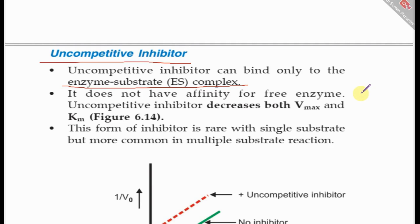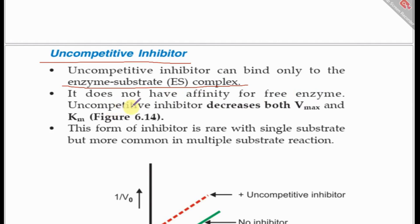In uncompetitive inhibition, the inhibitor binds only after the enzyme has bound the substrate — that is, it binds only to the enzyme-substrate complex. This means it does not affect the affinity of the free enzyme for the substrate, but it does affect the enzyme-substrate complex. As a result, uncompetitive inhibition decreases both the Vmax and the KM.